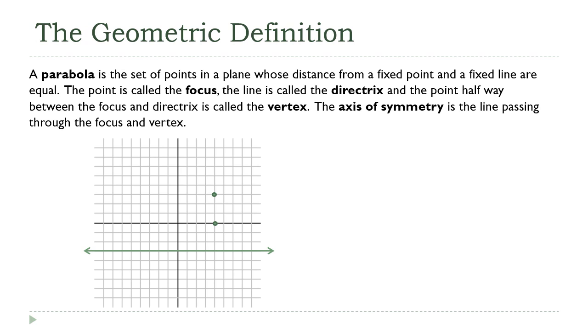The geometry definition is based on what's called a locus of points—a geometric definition that describes a set of points based on some required properties. For a parabola, we define it as the set of points in a plane where the distance from each point to a fixed point, called the focus, is the same as the distance from that point to a fixed line, called the directrix.